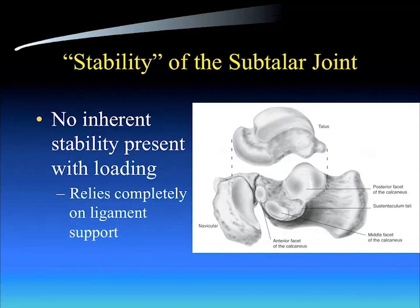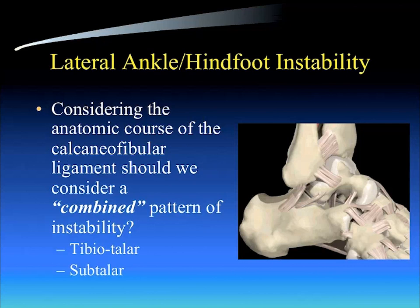We must consider the stability of the subtalar joint in every individual with inversion instability, because the subtalar joint, unlike the ankle joint with its mortise, has no inherent stability with loading — it relies completely on ligament support. If you lose ligament support on the lateral aspect of the subtalar joint, you have, by definition, subtalar instability. Perhaps we should be considering a more combined pattern of instability — tibiotalar and subtalar — when we see athletes with inversion instability.